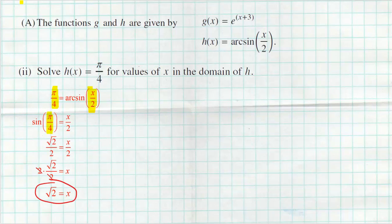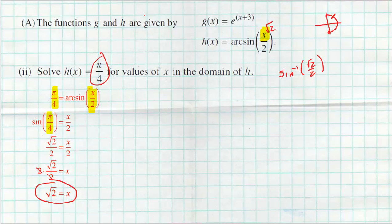I like to check my work. If I replace x with radical 2, I get inverse sine of radical 2 over 2. Inverse sine is limited to negative pi over 2 up to positive pi over 2, and in that interval the y-coordinate radical 2 over 2 occurs only at pi over 4, which is exactly the answer I wanted. There's no other solution to that problem.